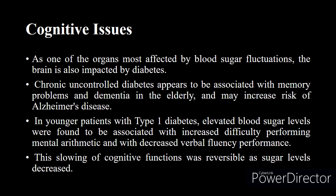The last complication is cognitive issues. The brain is one of the organs most affected by blood sugar fluctuation, as it depends on glucose. Chronic uncontrolled diabetes is associated with memory problems and dementia in the elderly and may increase the risk of Alzheimer's disease. In younger patients — typically type 1 diabetes — elevated blood sugar levels are associated with increased difficulty performing mental arithmetic and decreased verbal fluency. This slowing of cognitive function was found to be reversible as sugar levels decreased.